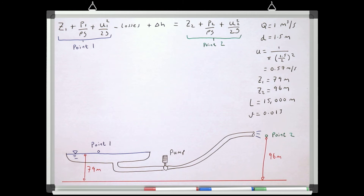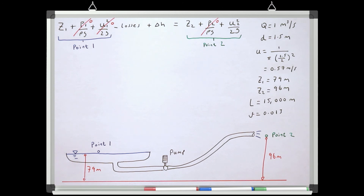We apply our new version of Bernoulli's equation between the water surface of Sherstoke Reservoir and the outlet pipe in Coventry. At point one, the pressure head and velocity head cancel — the reservoir surface is at atmospheric pressure and has negligible velocity. At point two, the pressure head cancels as the pipe discharges to atmosphere. We end up with: elevation at one, minus total losses, plus delta H from the pump, equals elevation at two plus velocity head at two. We rearrange to solve for delta H.